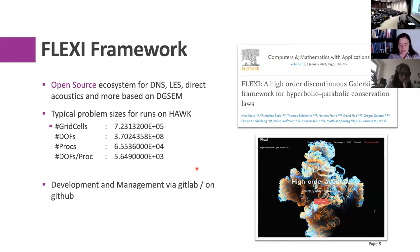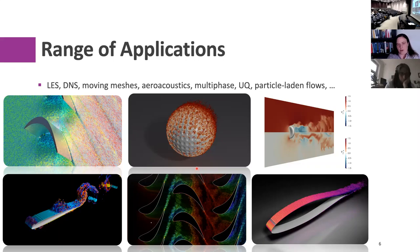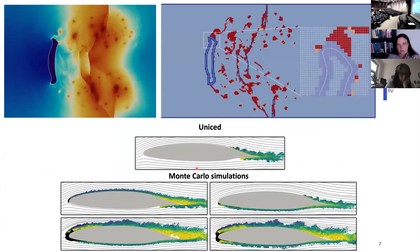Flexi is a high-performance code and we usually run large cases. You can check it out on the website or come talk to me. We are interested in all types of flows that deal with multi-scales, particularly turbulence. Most of the applications are from the aerospace sector: LES, DNS, moving meshes, aeroacoustics, and particle-laden flows.